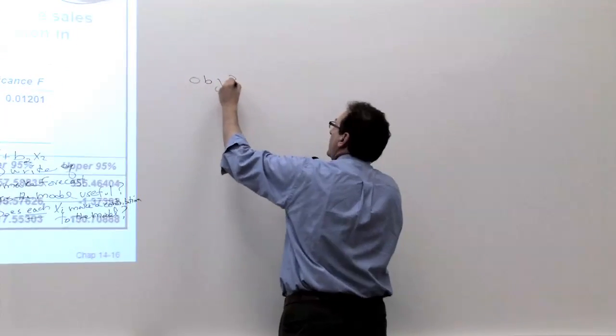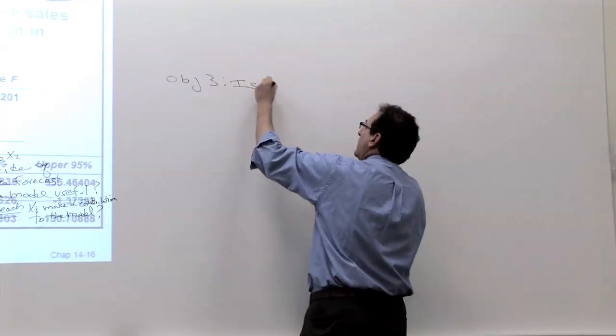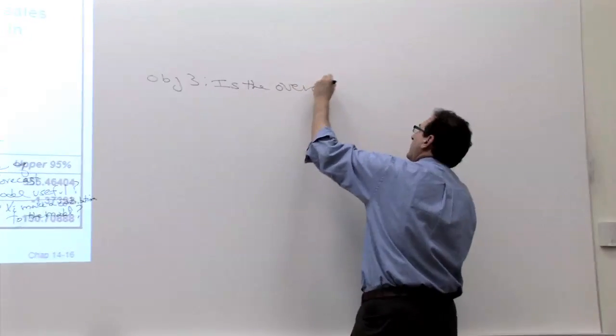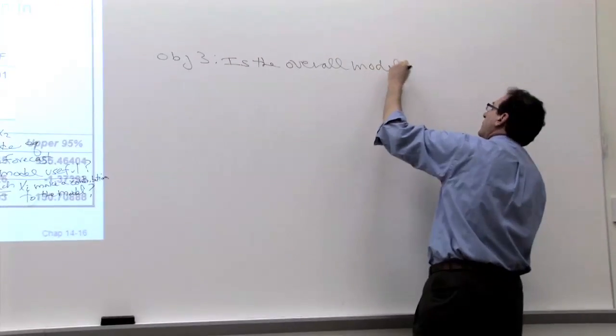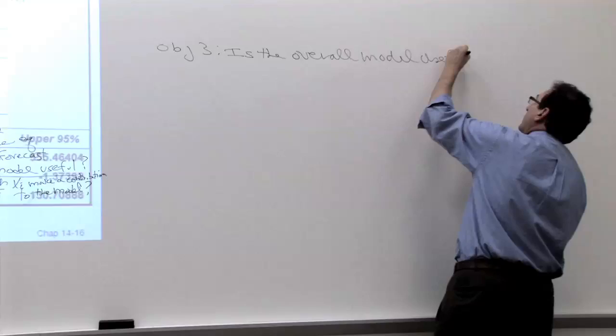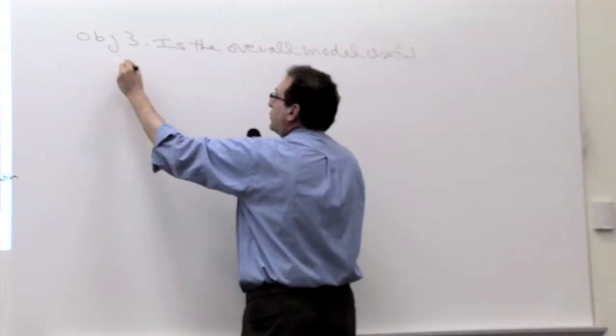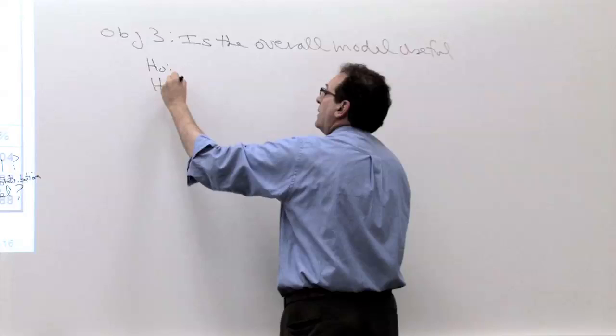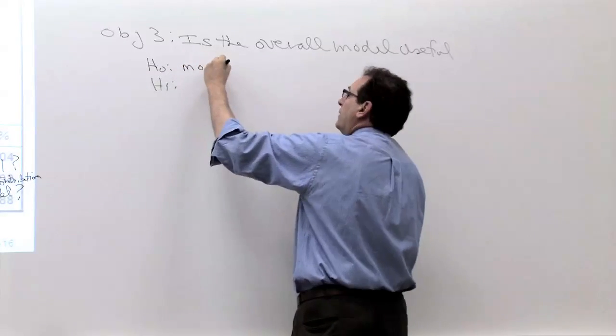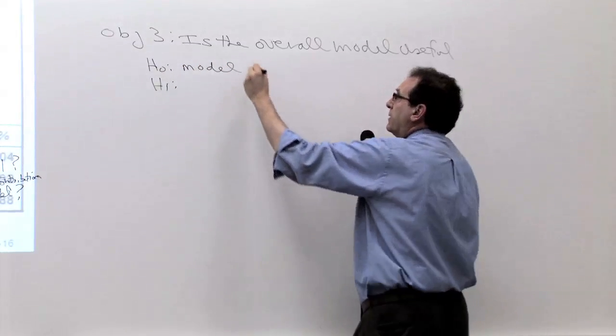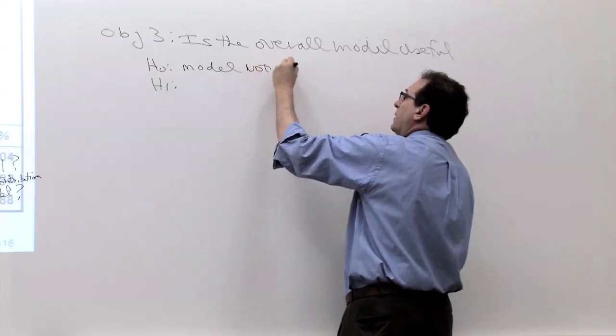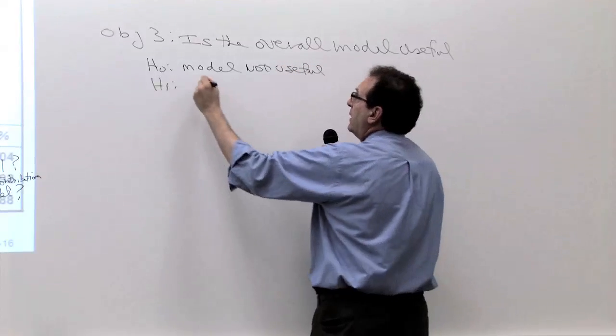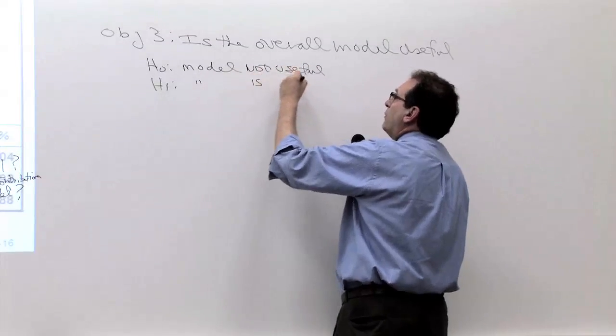Objective number three is the overall model useful? Now, again, to save time, I'll answer my own questions. H0 is going to be the model is not useful. We always express the H0 in the negative. Model not useful, meaning that all the x's drop out of the equation. None of the x's are valuable. Model is useful would be the H1.